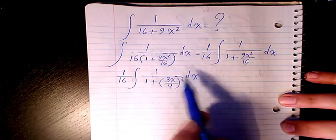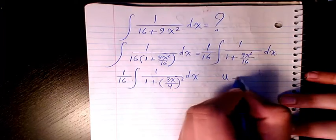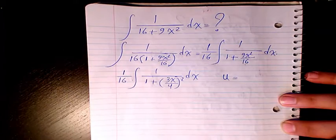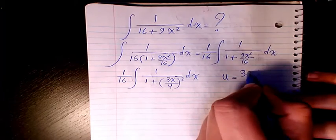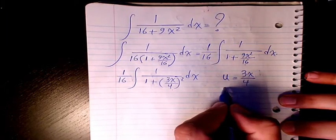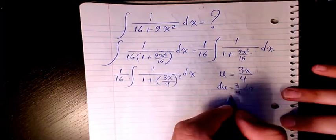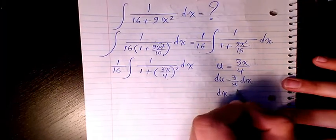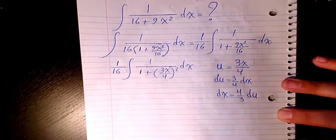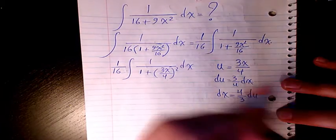So I use the substitution method and define u as 3x divided by 4. So du will be 3 over 4 dx, so dx will be 4 over 3 du. So that changes to